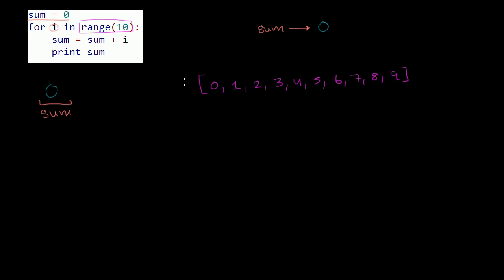We go into the for loop. The first time through, i is assigned to the first element — i is 0. The better way to think about it is i is referring to this first element. We go through the loop and it says sum plus i: sum is 0 and i is 0, you add them, you get 0. So sum is still referring to 0. Then this line prints the sum — the sum right now is just 0, and it printed it out. Then it goes back to the for loop and asks: are there any more elements to assign i to? Sure there are, so it makes i the next element in the sequence — i is now 1.